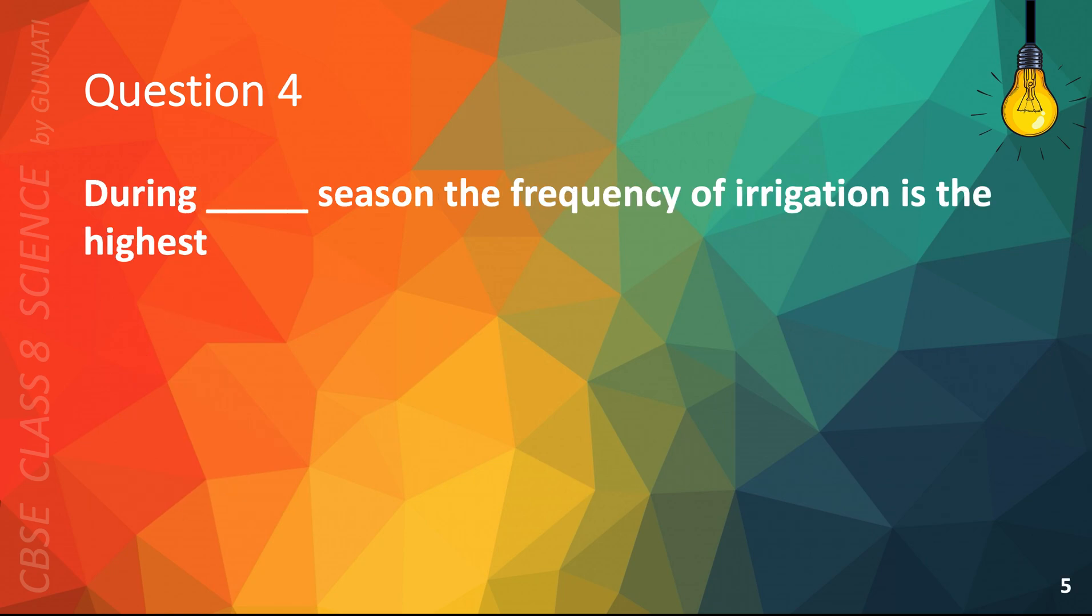Question 4. During blank season, the frequency of irrigation is the highest. A. Rainy, B. Day, C. Night, or D. Summer. The correct answer is D. Summer.